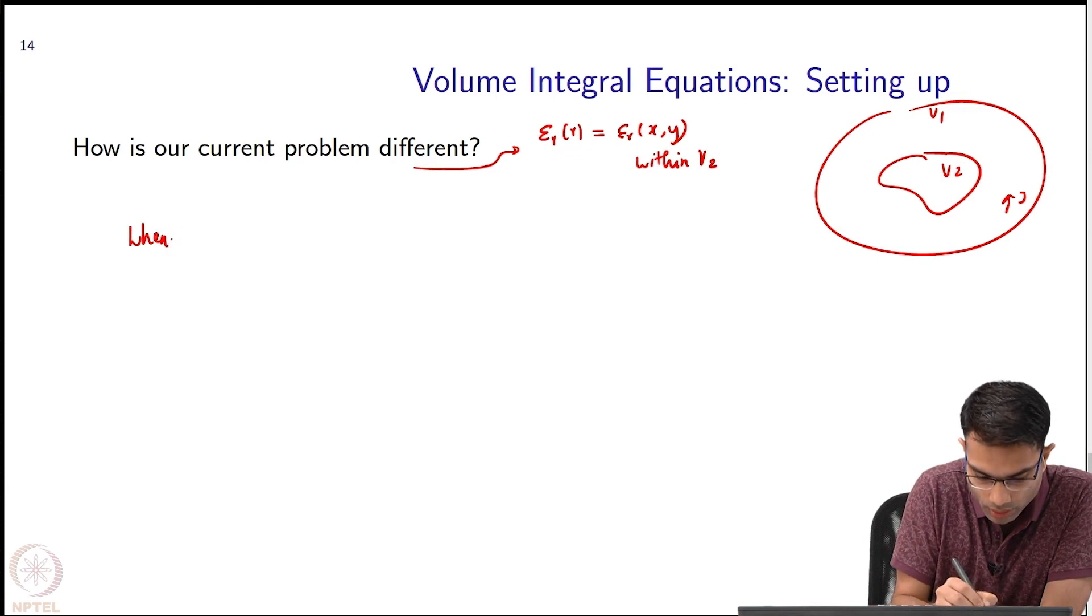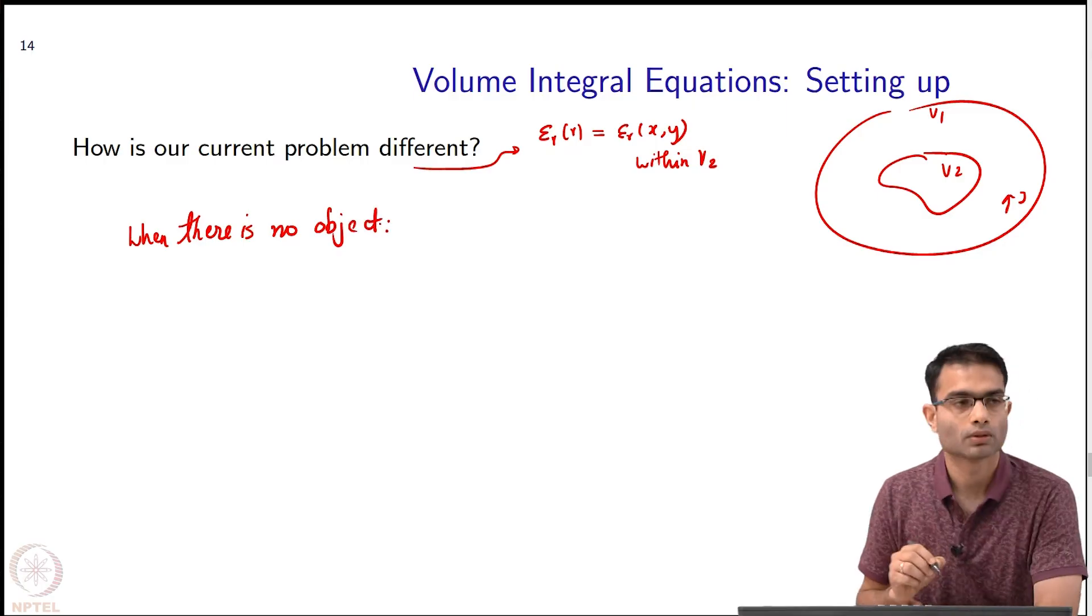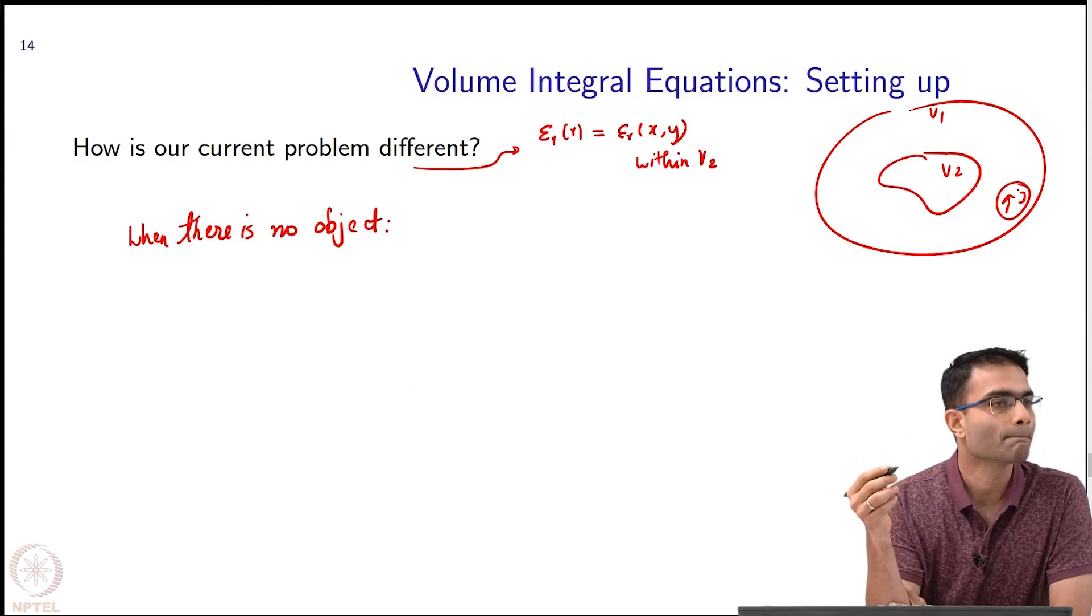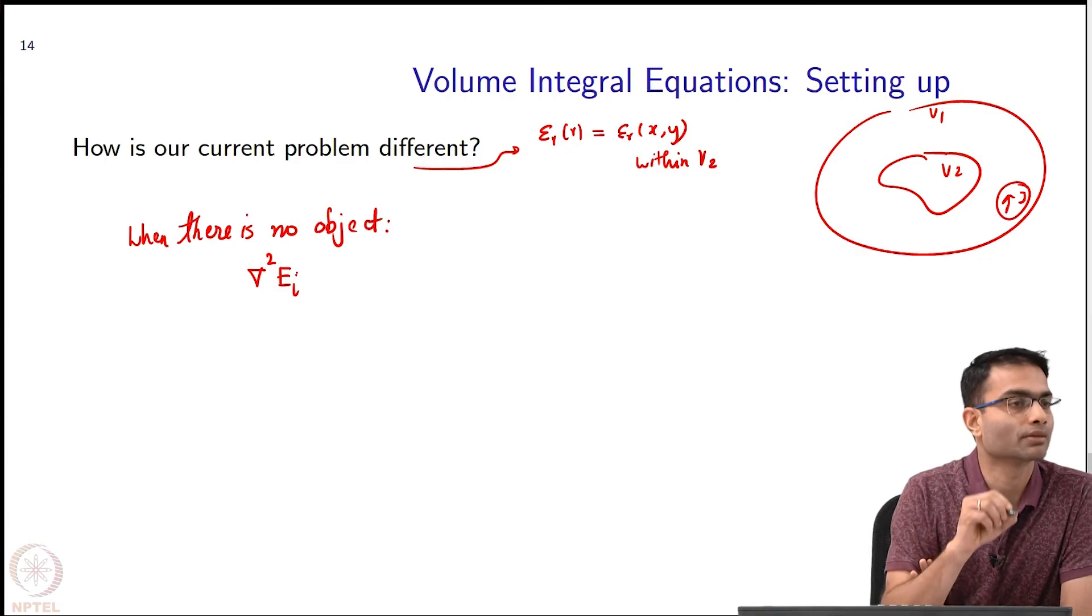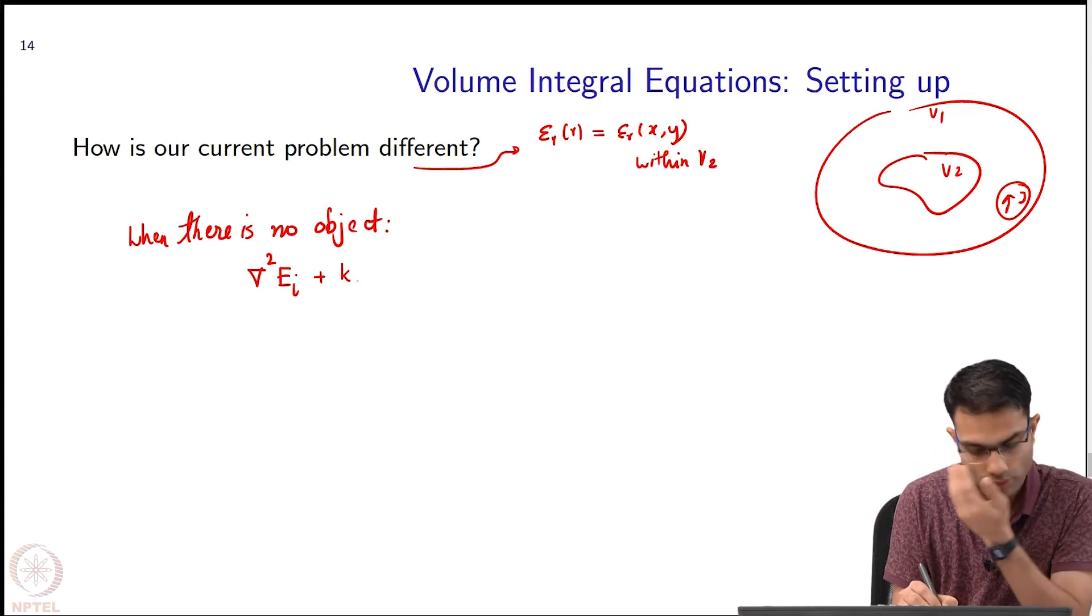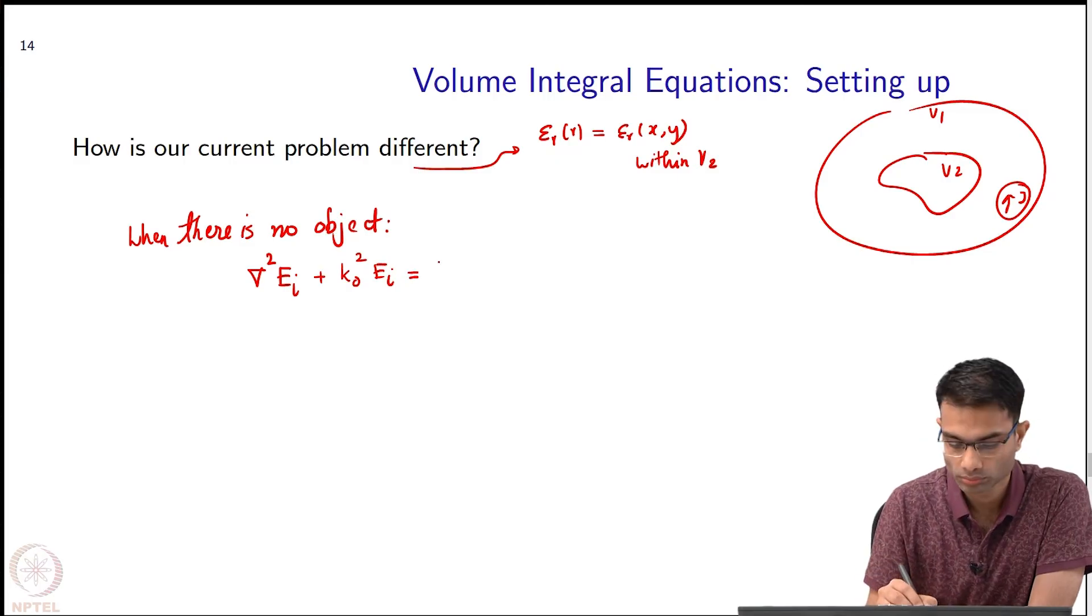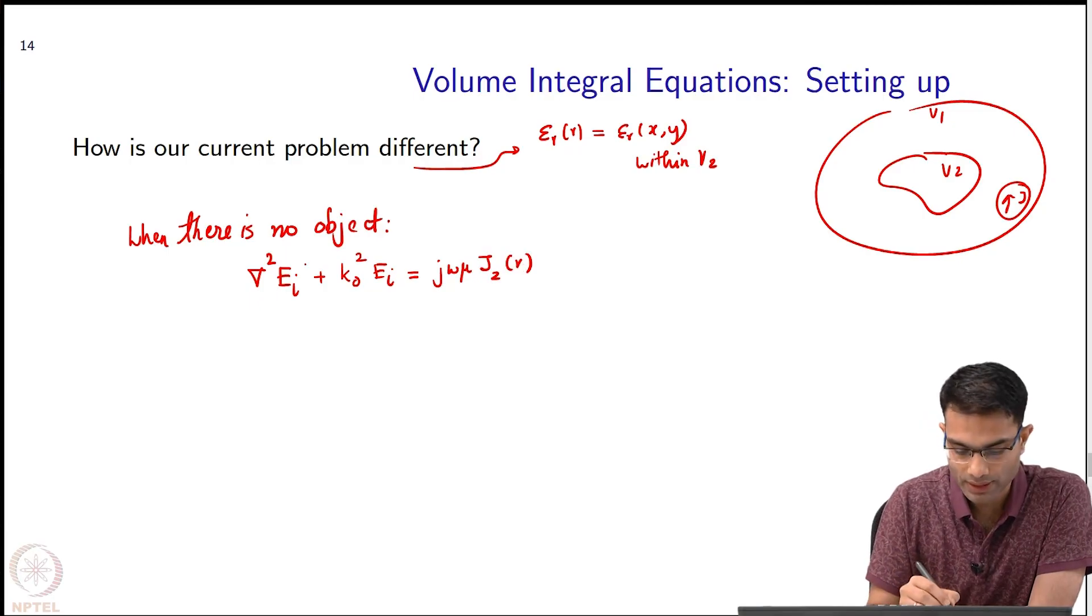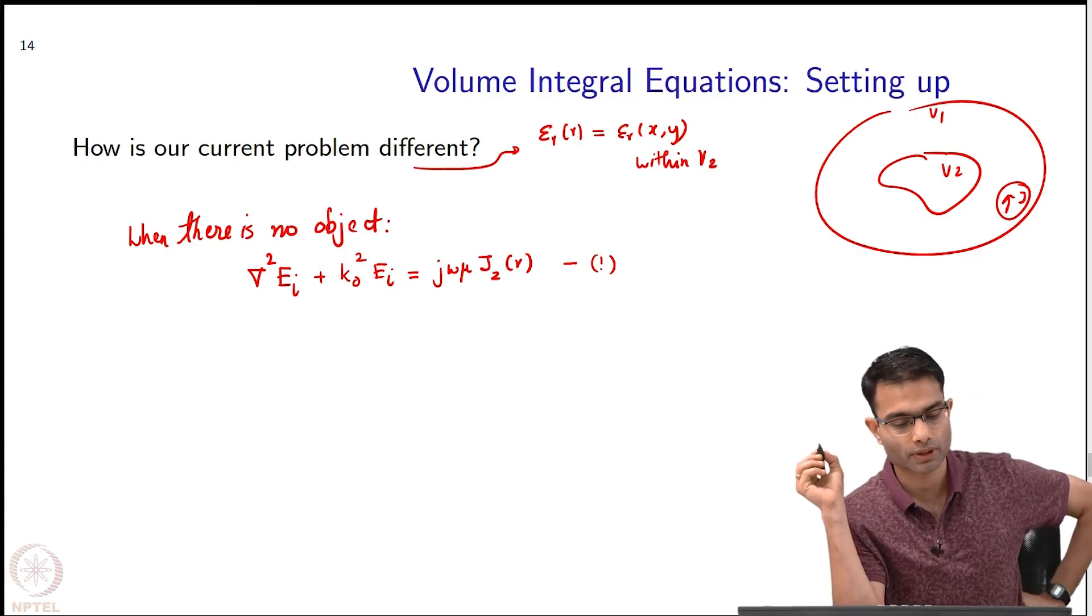Let us say when there is no object. I have the current source over here and there is no object over here. What will my Helmholtz equation be? I will have del squared, let us call it E incident because there is nothing to scatter the field. The total field is just the incident field produced by the source. Then I will write k naught square because it is vacuum, E i is equal to j omega mu j z of r. These guys, this E i is also a function of r I am just not writing it over here. This is our equation in the absence of object.